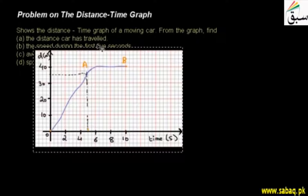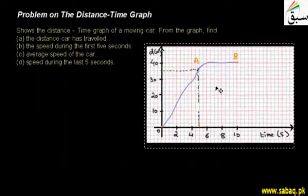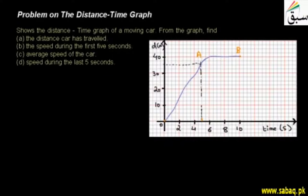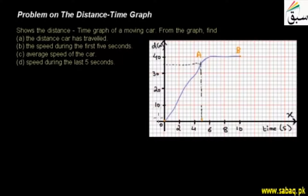You can see the distance-time graph that has been shown to you. The graph has two sections. The distance is in meters and one block equals 10 meters. The graph shows the behavior of the car's motion — that is, distance versus time.